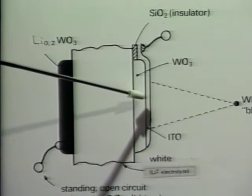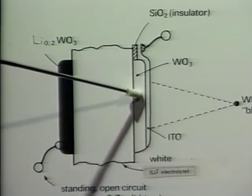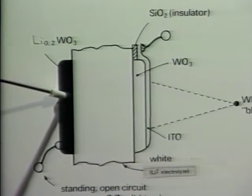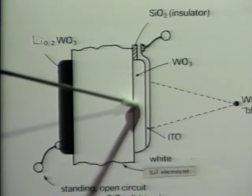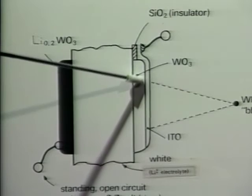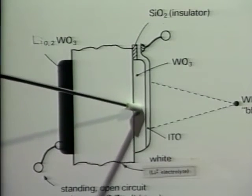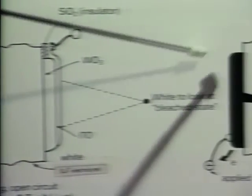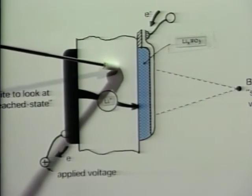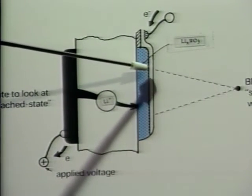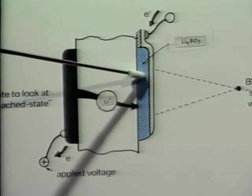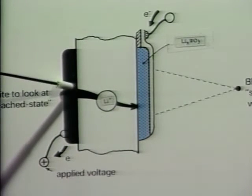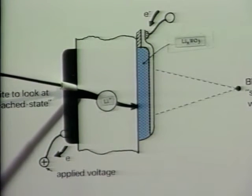The front electrode is made negative, whereupon lithium ions will pass through the system and be discharged here, making the colorless front electrode go blue, as is illustrated in the next diagram. On reversal of the polarity, the lithium ions will revert to the rear electrode and the electrode system will go colorless again.